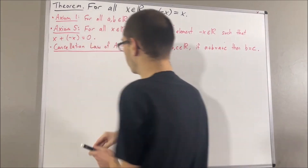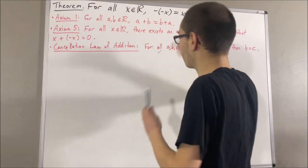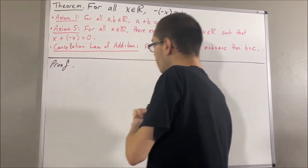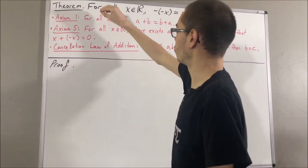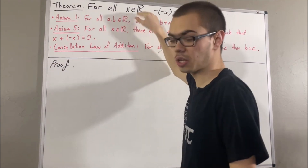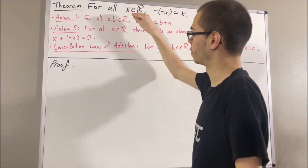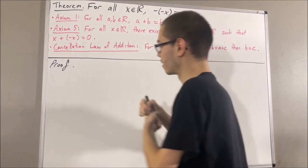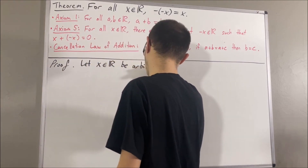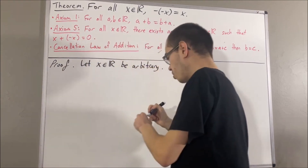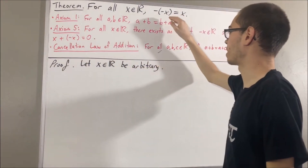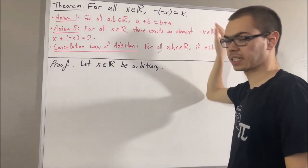So now let's get into proving this theorem. To start off the proof, since we're trying to prove a statement about every real number, let's give ourselves an arbitrary real number, call it x. From here, we want to show that the negative of negative x is equal to x.